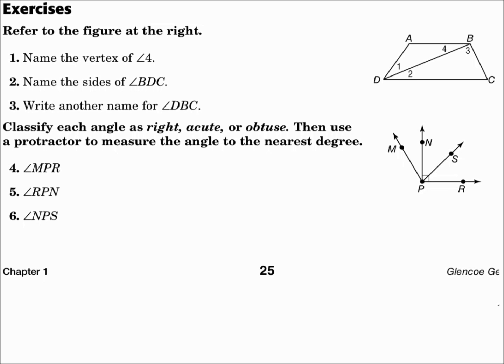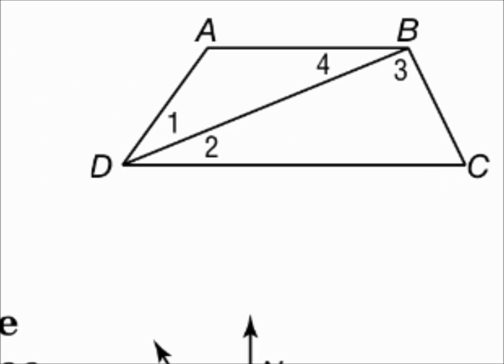Refer to the figure at the right. Name the vertex of angle 4. There's angle 4, and the vertex is point B.